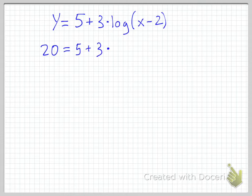So let's say 20 is y. That means I now got to get x by itself. So my goal here is actually first to get the logarithm of x minus 2 by itself, that way I can change it into an exponential equation.